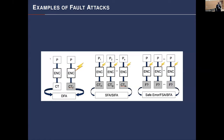There are different types of fault attacks. Differential fault attacks (DFA) involve encrypting a message, injecting a fault, and comparing output differences to learn about the state or key. Statistical ineffective fault attacks (SIFA) use many plaintexts with injected faults and observe statistical properties. Safe error attacks involve injecting a fault and checking whether it had no effect on the message, which also reveals information about the state.